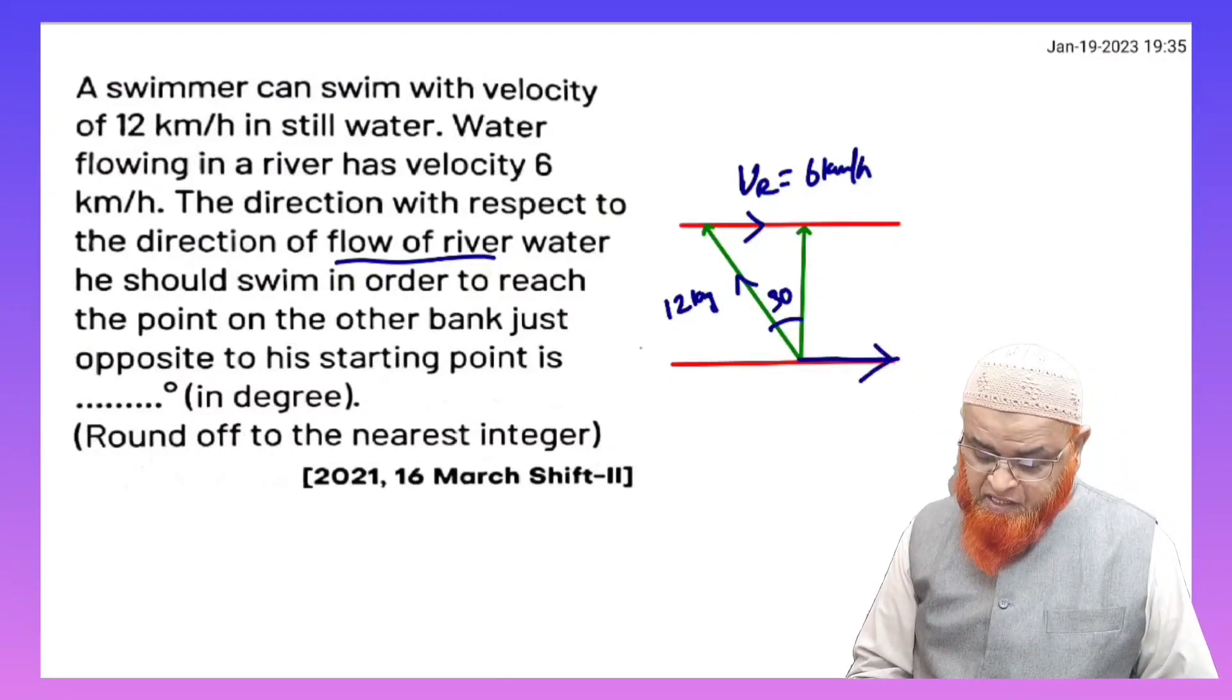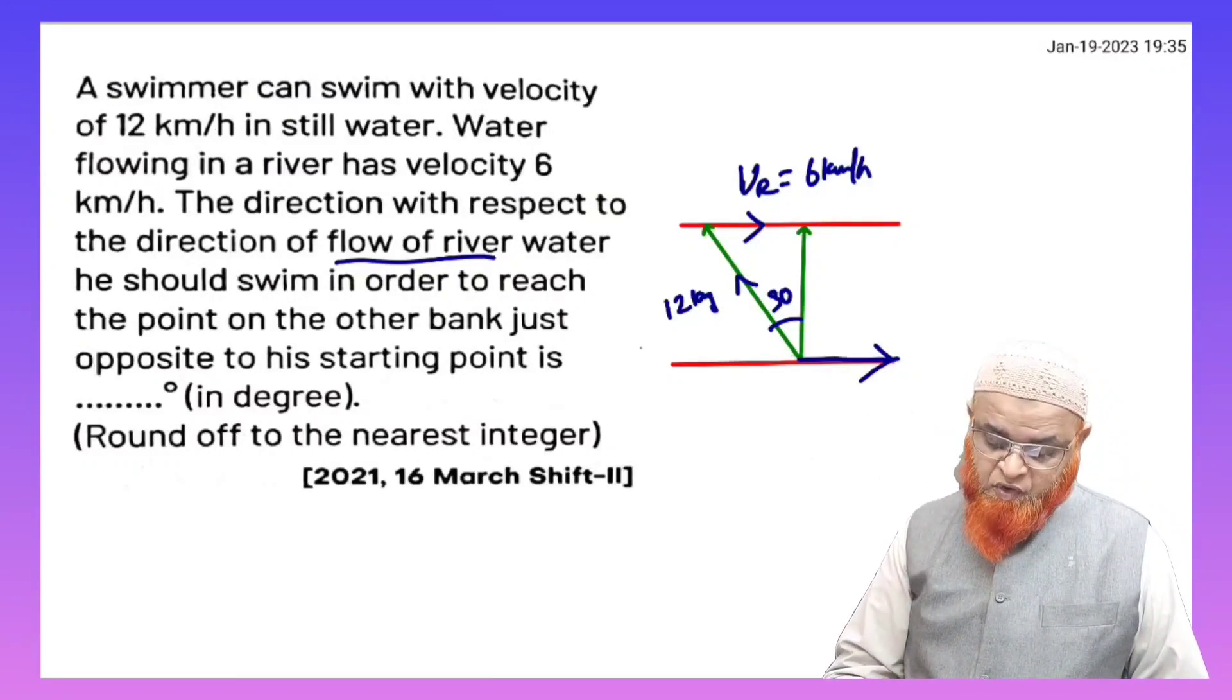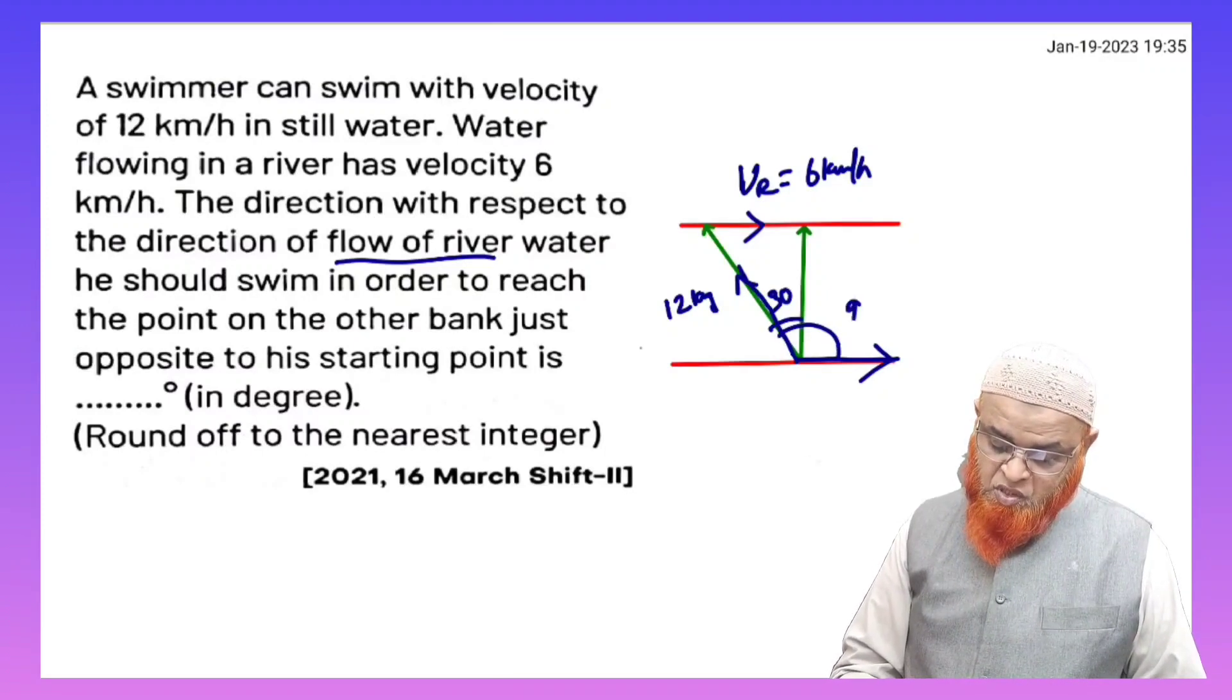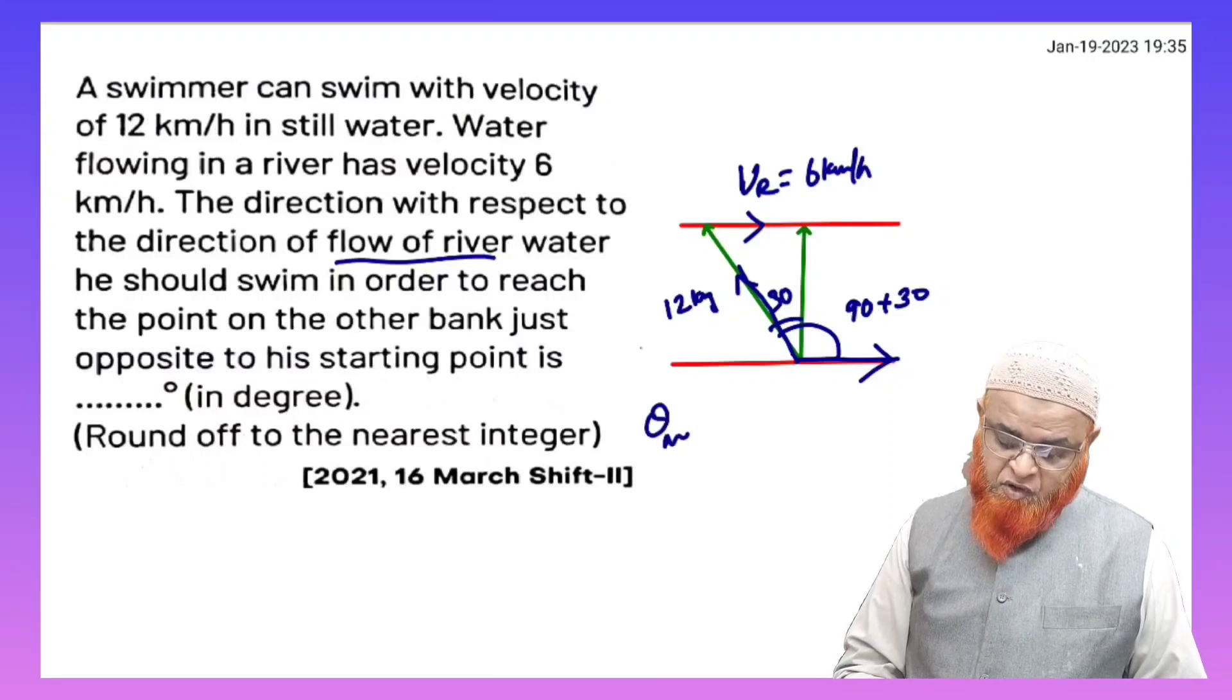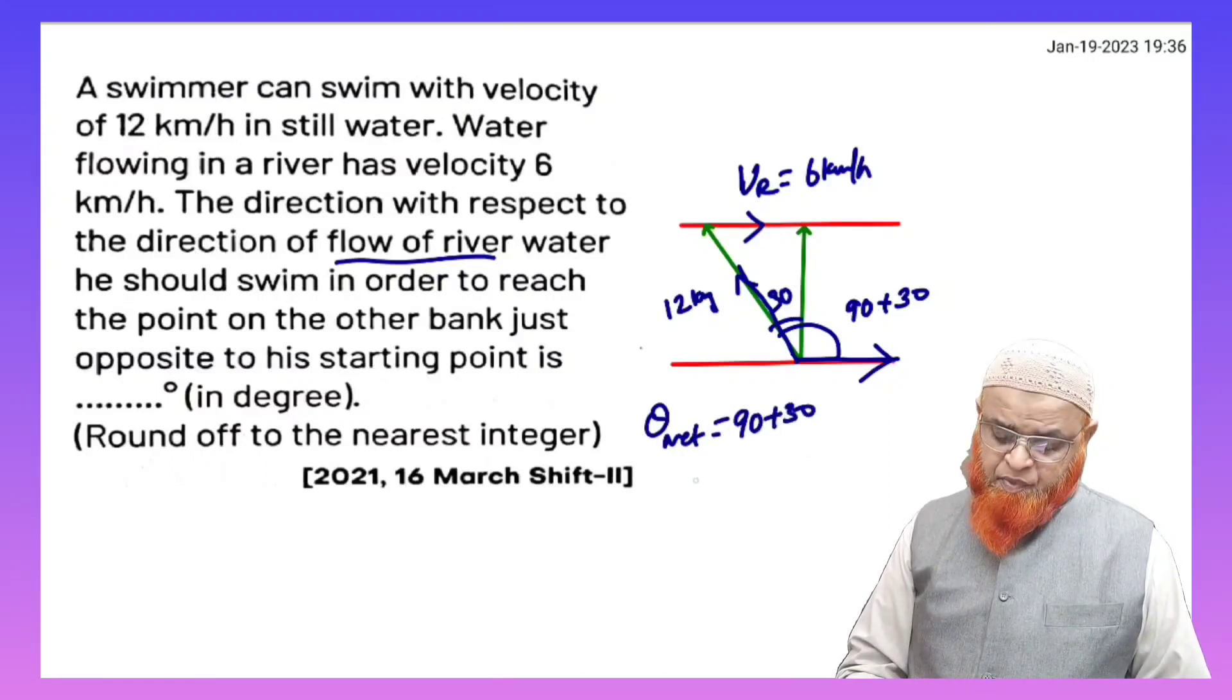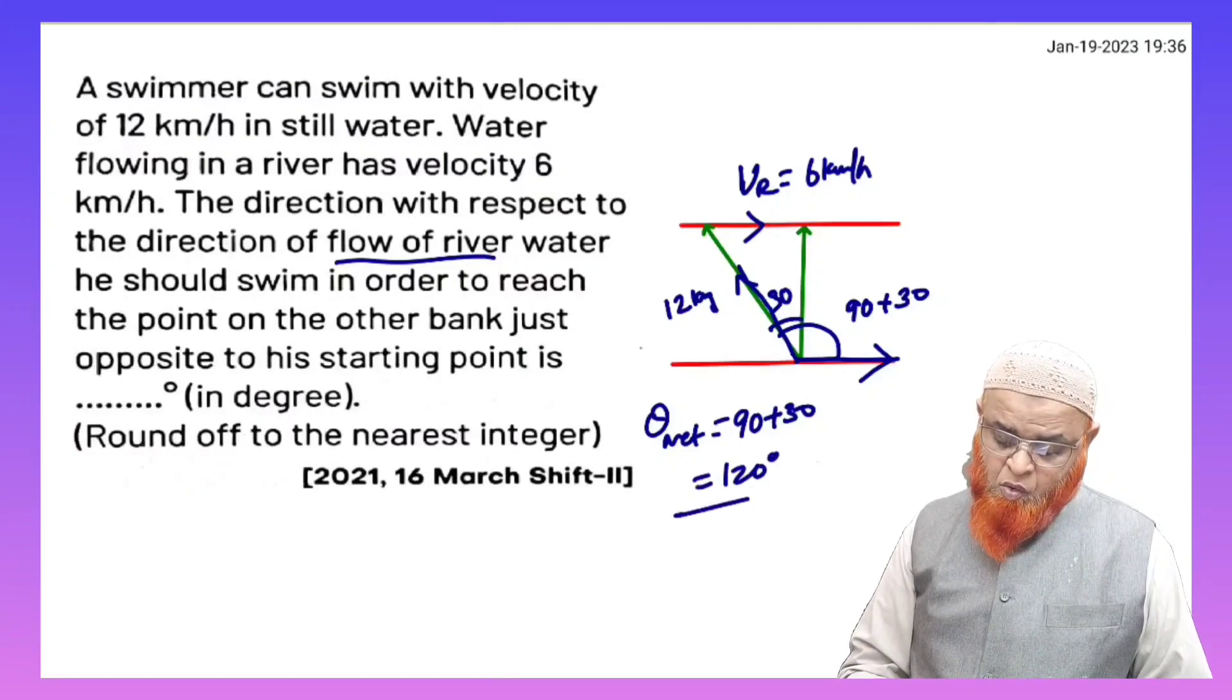So the river is flowing in this direction and the boat is flowing in this direction. And therefore, what is the total angle? The total angle is going to be 90 plus 30. Therefore, the net angle is going to be 90 plus 30, which is going to be 120 degrees.